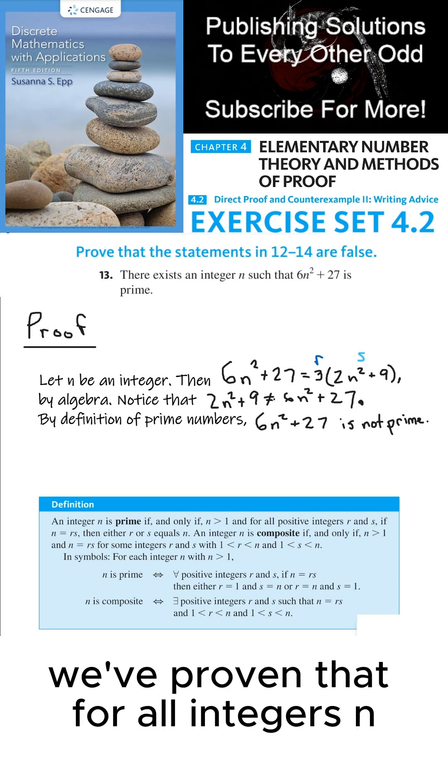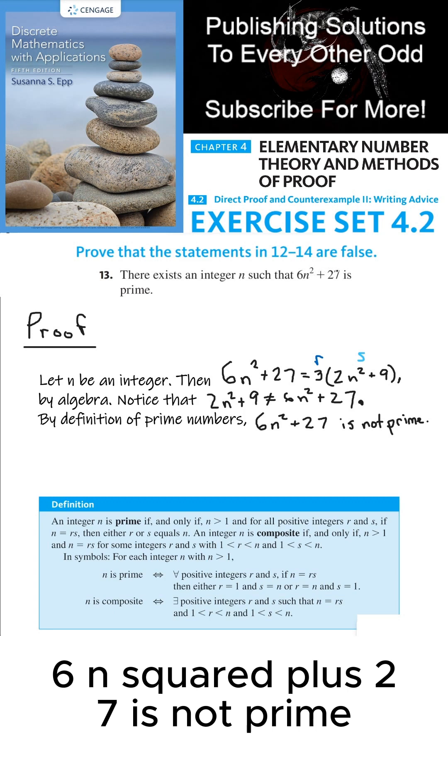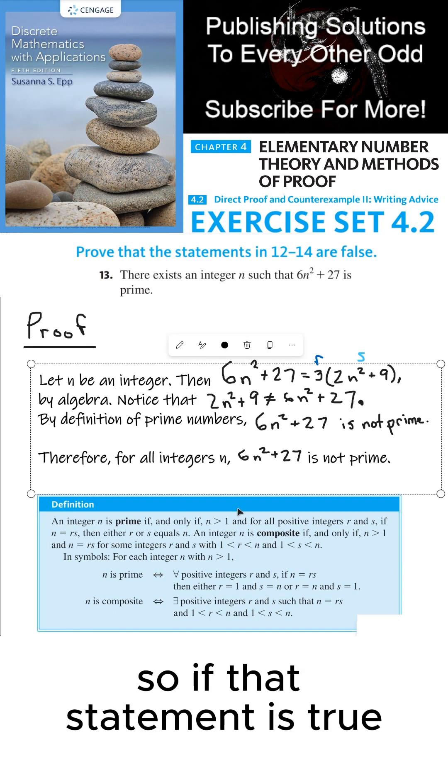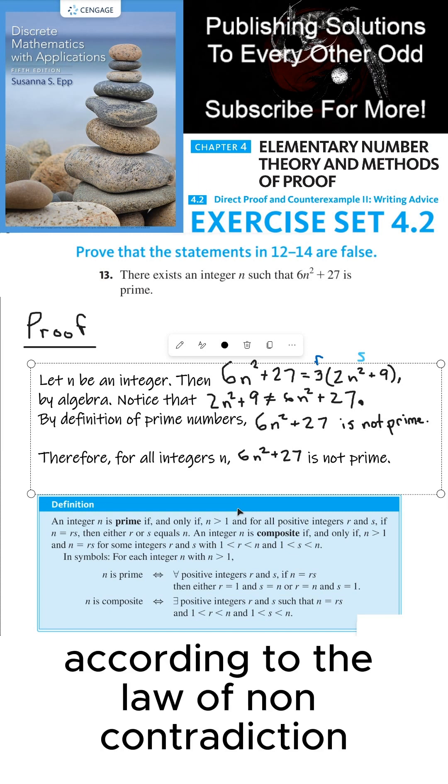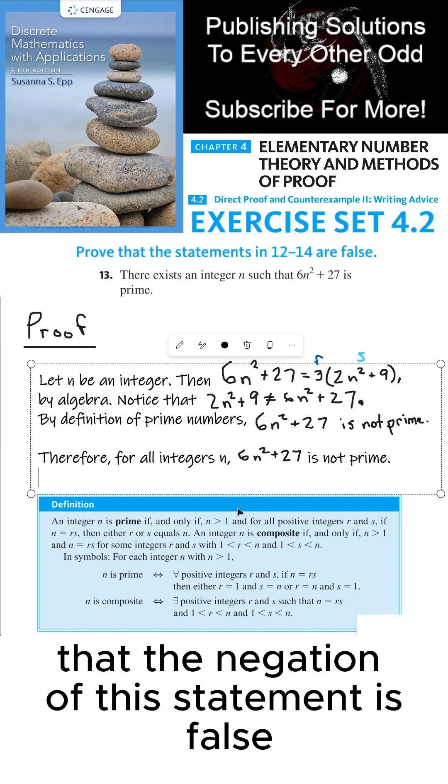So what have we proven? We've proven that for all integers n, 6n squared plus 27 is not prime. So if that statement is true, then that means according to the law of non-contradiction that the negation of this statement is false.